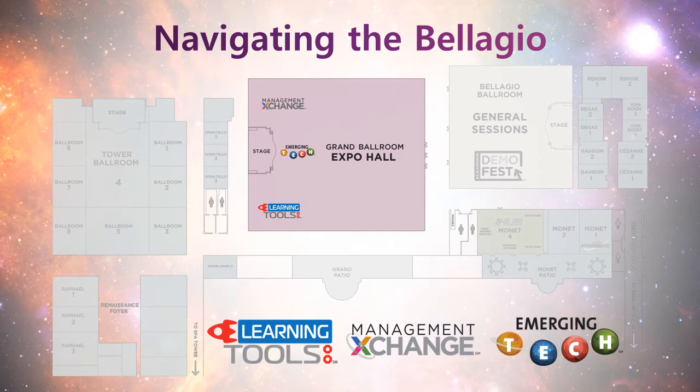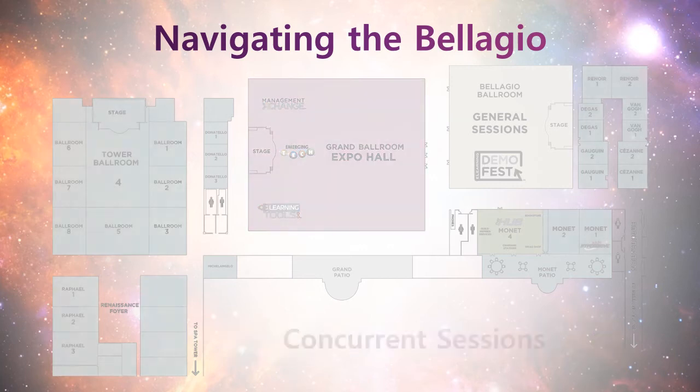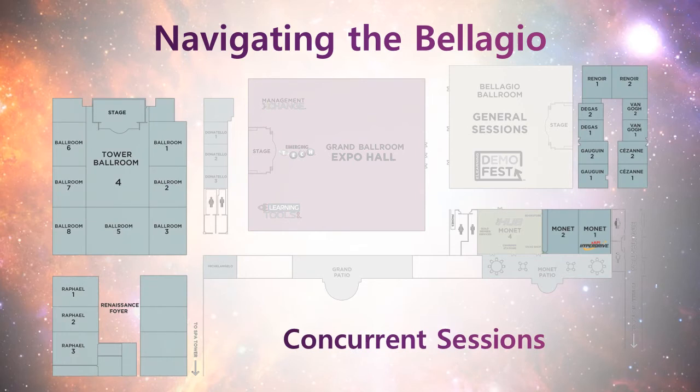Full details on those sessions can be found in the conference app. Speaking of sessions, we have over 120 different sessions taking place over the three days at the conference. They'll be taking place in the ballrooms on the left-hand side of your map and the rooms on the right-hand side of your map. Full details on the sessions, when they're taking place, and the session descriptions are available in the conference app.